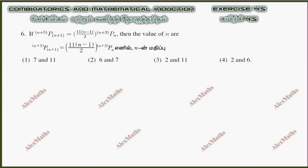Hi students, this is Alex here. X is 4.5, question number 6. If (n+5)P(n+1) equals 11 into (n-1)/2 into (n+3)Pn, then the value of n — that we have to find.